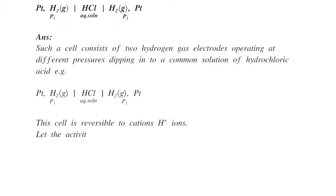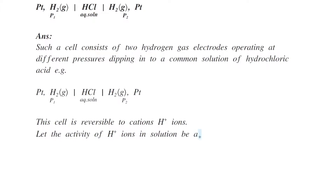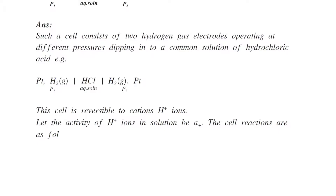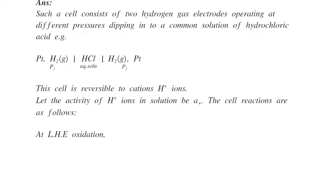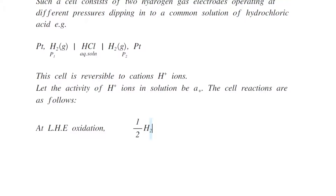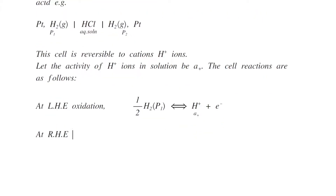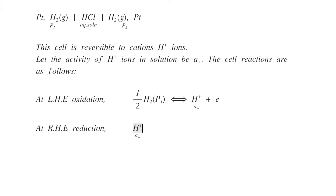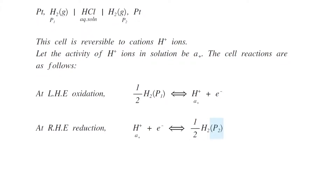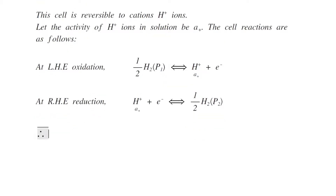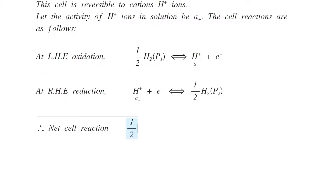Let the activity of hydrogen ions in the solution be A+. The cell reactions are as follows. At the left-hand electrode, oxidation takes place: half of hydrogen at pressure P1 is converted into H⁺ ions of activity A+, plus one electron is liberated. At the right-hand electrode, reduction takes place: H⁺ ions of activity A+ combine with one electron, producing half of hydrogen gas at pressure P2. So the net cell reaction is: half of hydrogen at pressure P1 is converted into half of hydrogen at pressure P2.